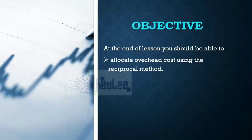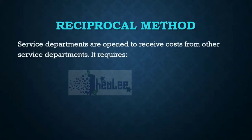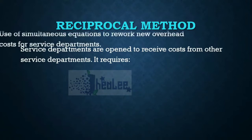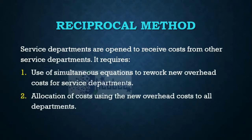In previous lessons, we have looked at the direct allocation, the step-down method, the repeated distribution, also known as the repetitive distribution method. If you have missed those lessons, the links are in the description below. Now let us zero in on the reciprocal method. The reciprocal method allows service departments to be open to receive costs from other service departments. It requires two things: one, use of simultaneous equations to rework new overhead costs for service departments, and two, to allocate those costs using the new overhead costs to all departments.